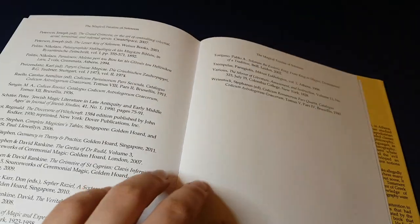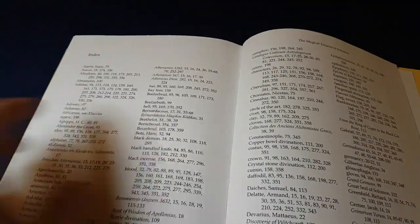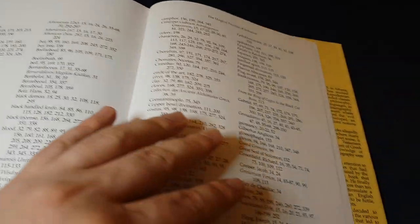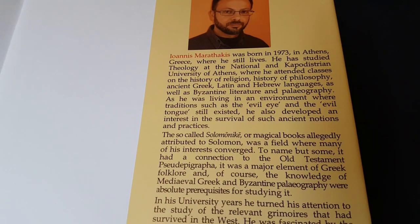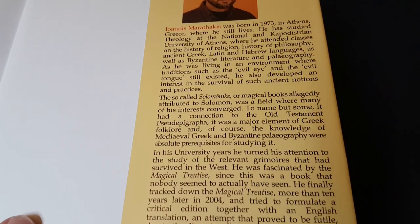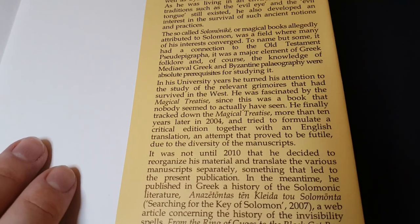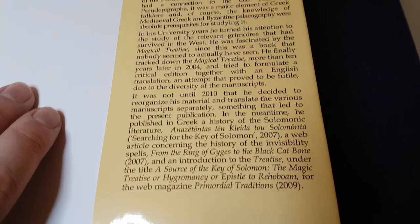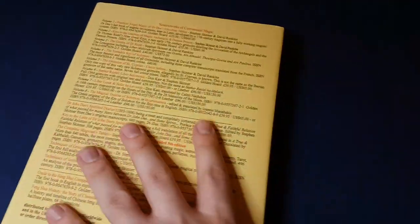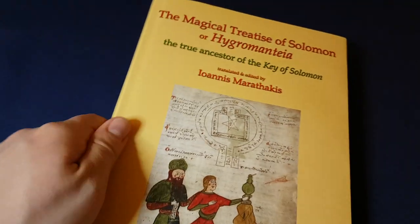Nice table showing which chapter appears in what manuscript, nice bibliography, a very short index, just a couple of pages there we go. Okay so that's it, the Hygromantia. Here's a little biography of Ioannis Marathakis.